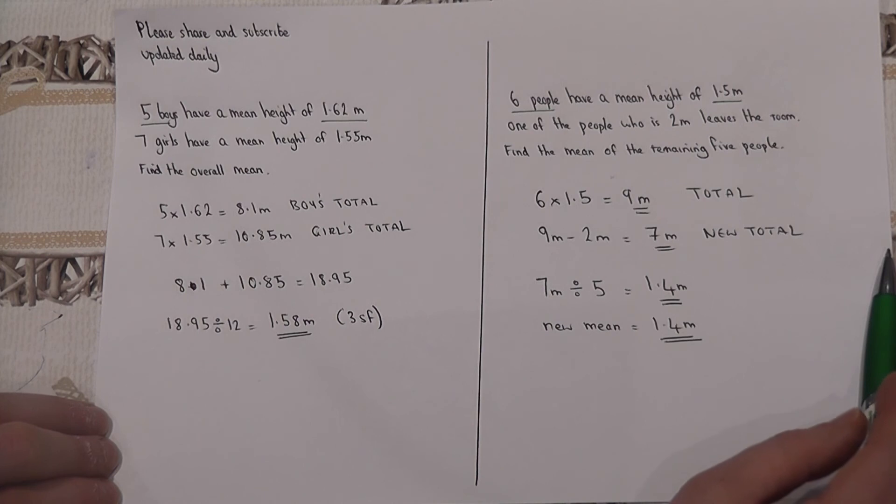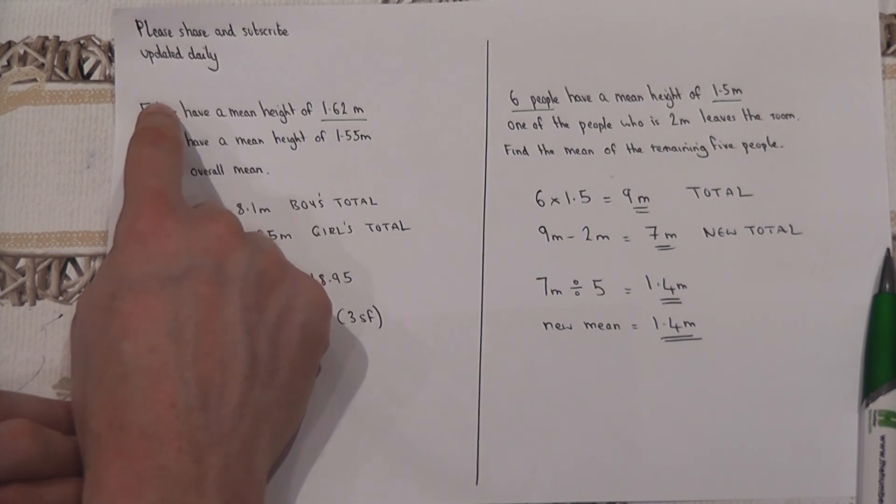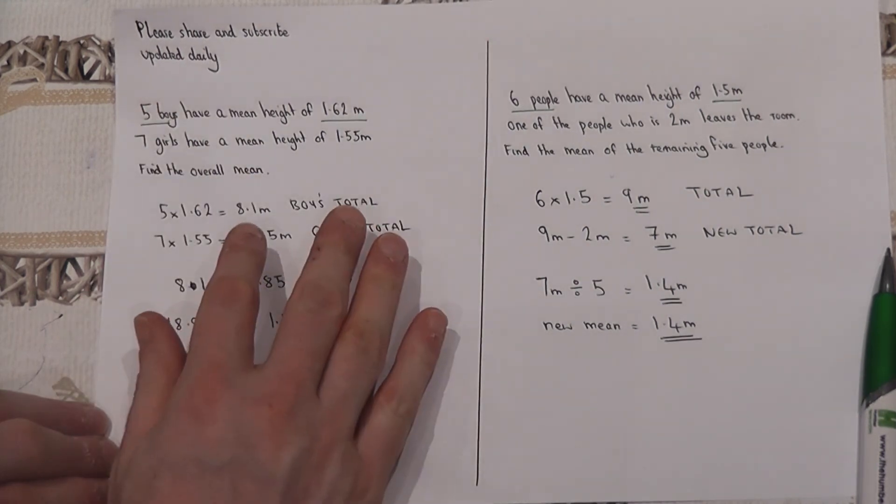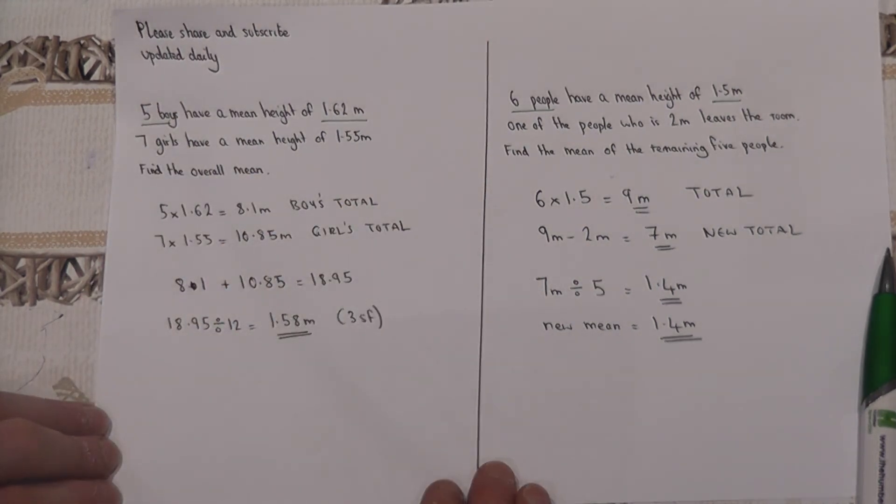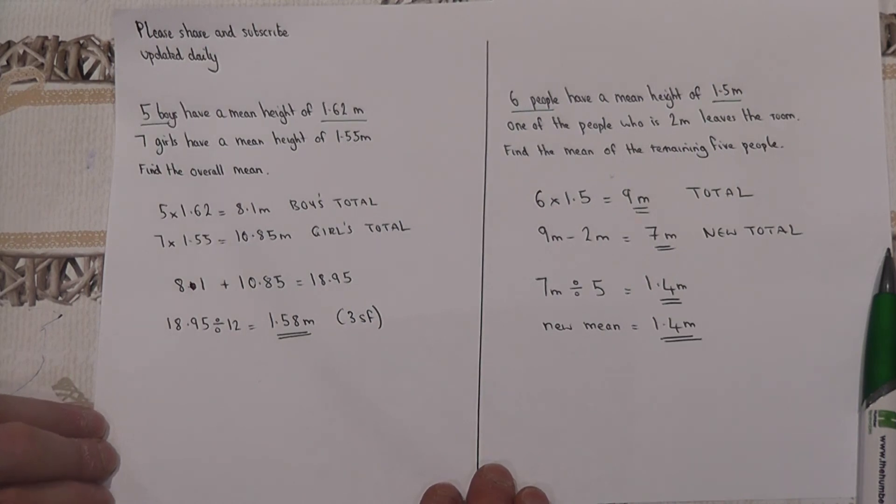So the golden rule when working with combining means again is to multiply the means by the number of people and work with those totals. Again, please do share and subscribe and keep on checking back for more essential revision videos.